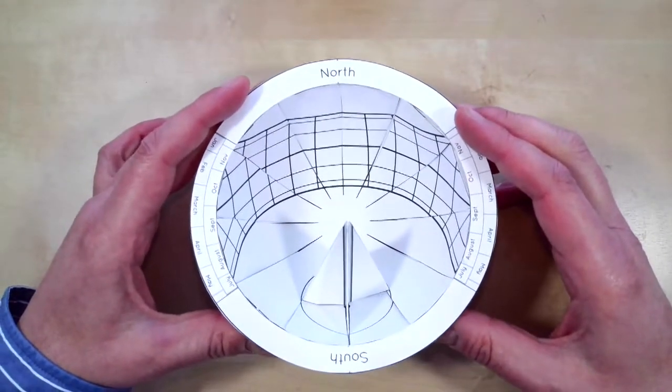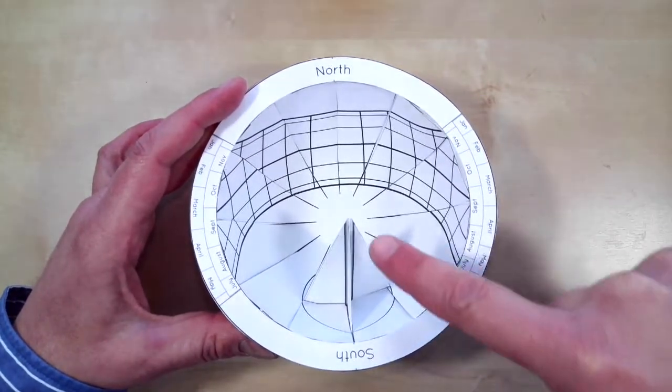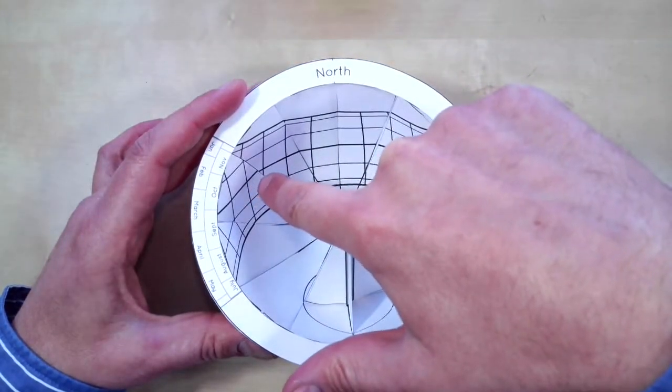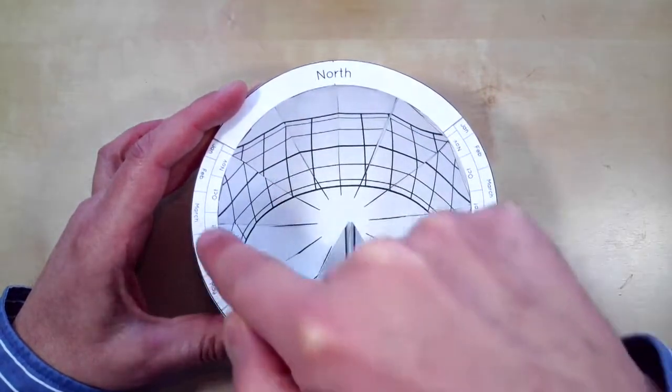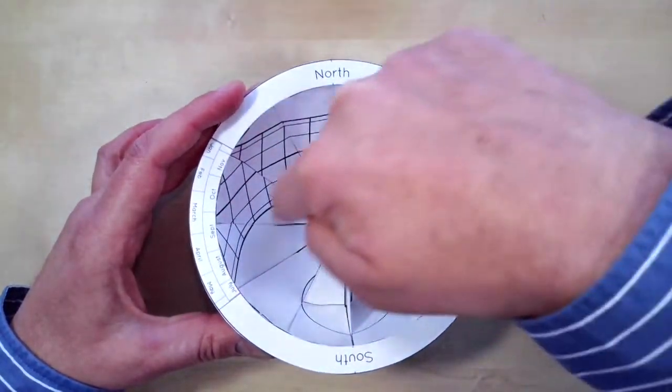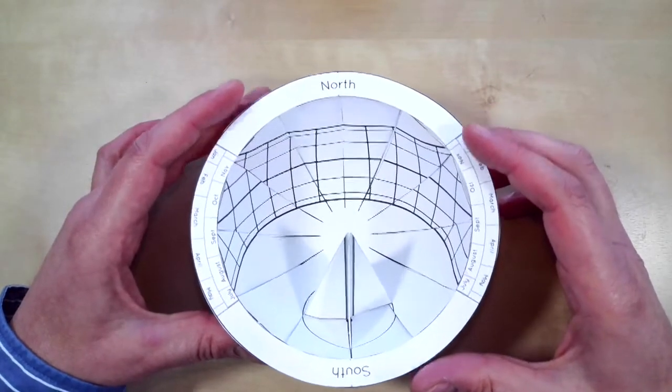Now what happens if I put this out in the sunshine? When the sun rises over here in the east, it's going to cast a shadow. So this tip is going to cast a shadow on the western wall of the bowl, and as the sun follows this path across the sky, the shadow will follow this path across the bowl. I have a working model of the sky now.